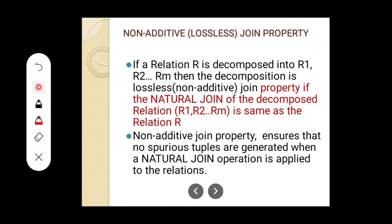The non-additive or lossless join property ensures that no spurious tuples are generated when the natural join operation is applied. Spurious means unwanted. There will not be any unwanted tuples when we join these sub-relations. If any unwanted or spurious tuples are present, then those sub-relations do not follow the non-additive or lossless join property.